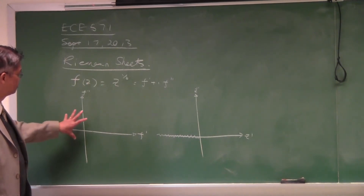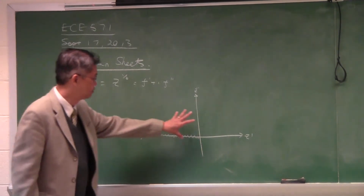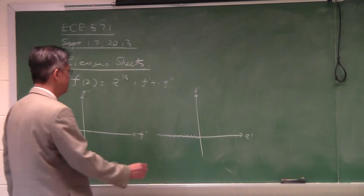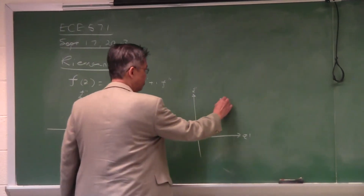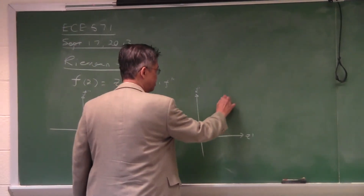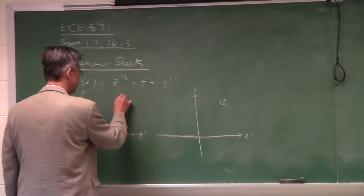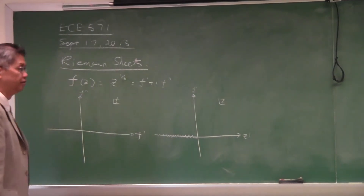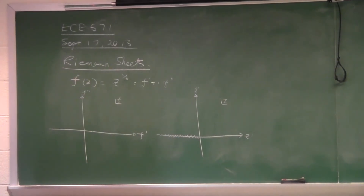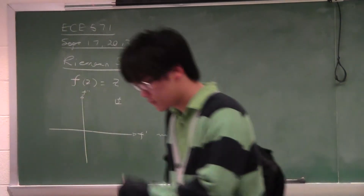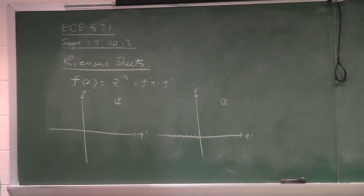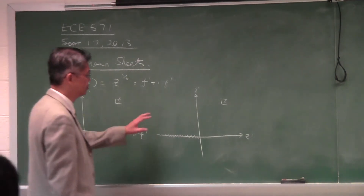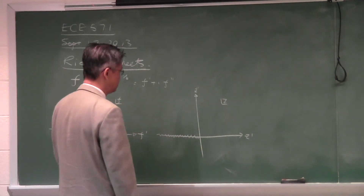In order to map f of z completely into the complex z plane — this is a complex z plane which usually is denoted like this, and this is a complex f plane — we need to use two Riemann sheets.